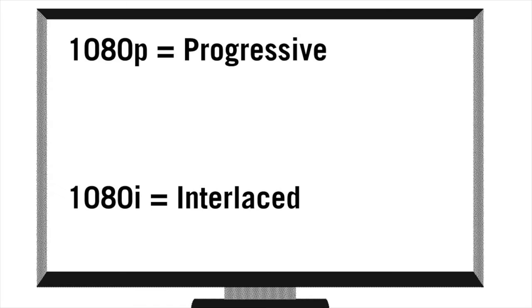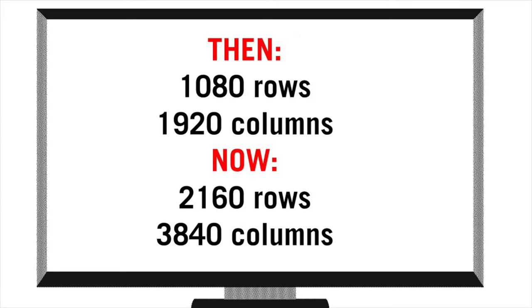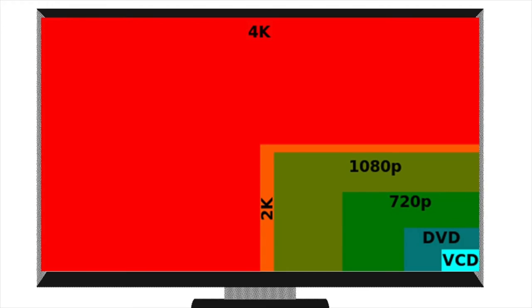So now we have 1080p on most televisions, Netflix, YouTube, and more. But is there a way to get more lines? The next era of high definition replaces these 1080 rows with 2160 rows and nearly 4000 columns. Since there are twice as many rows and twice as many columns, it equals about four times the amount of pixel space, which is why they call it 4K.